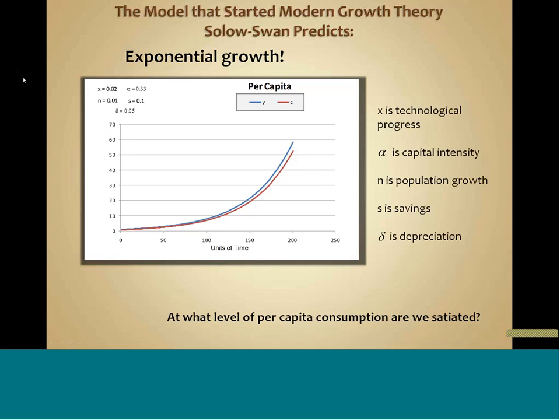Now we're going to take a look at some economic theory. This is the original seminal growth model from the 1950s — it's called Solow and Swan, named after the two economists who put this out. This is a very simple simulation that takes the Solow-Swan model and goes forward in time with some basic parameter settings that more or less mirror what we expect in our economy. As you can see, we have exponential growth. The blue line is output per capita and the red line is consumption per capita predicted by this relatively simple model.